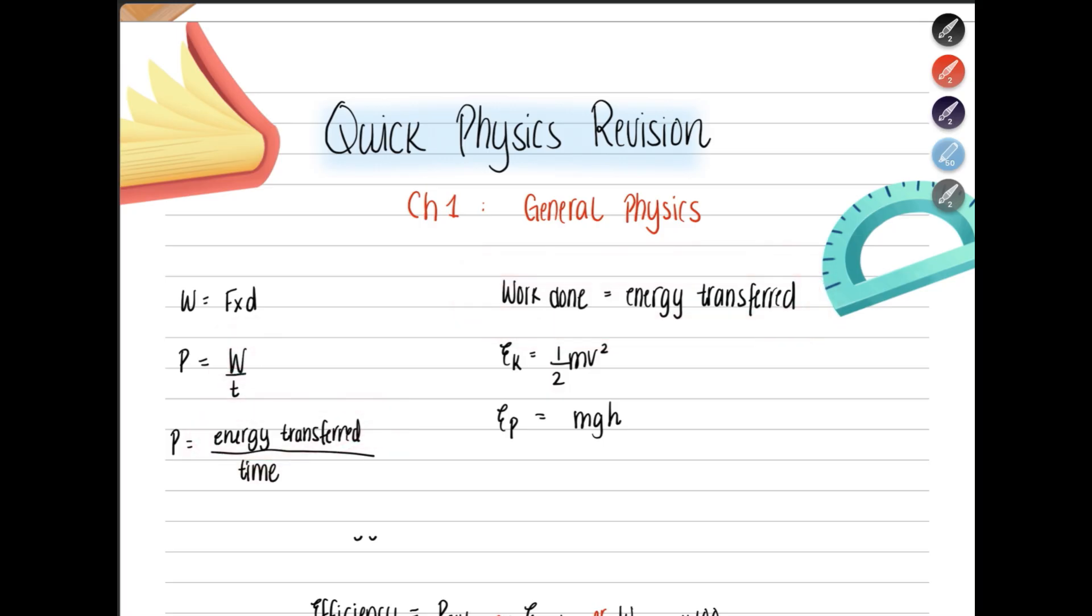And then we have kinetic energy. Kinetic energy equals half mv squared, mass times velocity squared. Potential energy equals mgh. In some cases, you can say kinetic energy equals potential energy. If these are same, then we can equate them. So mgh equals half mv squared. Now you can cancel the masses and you can find any unknown quantity, even if you don't have the mass.